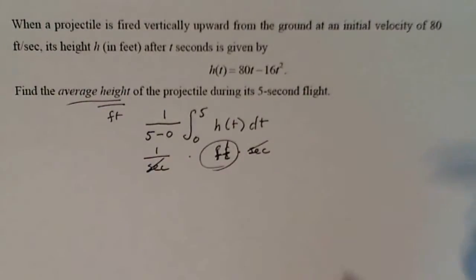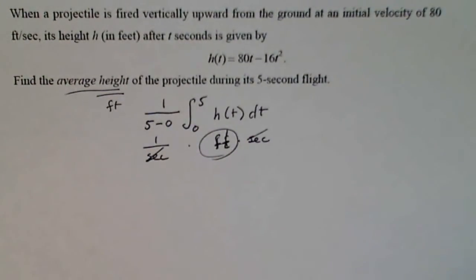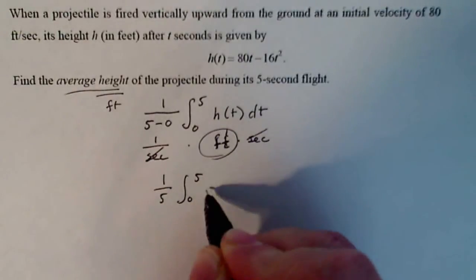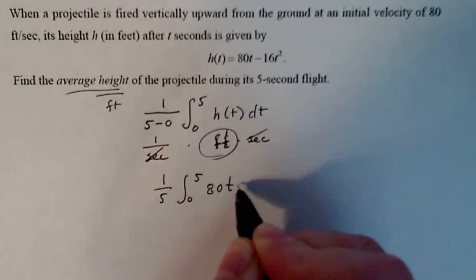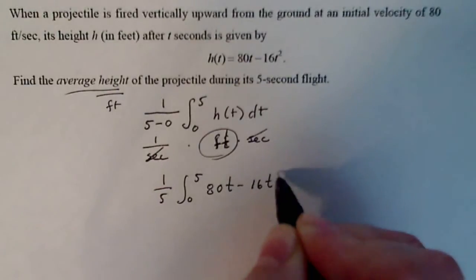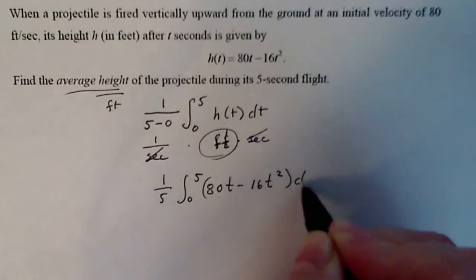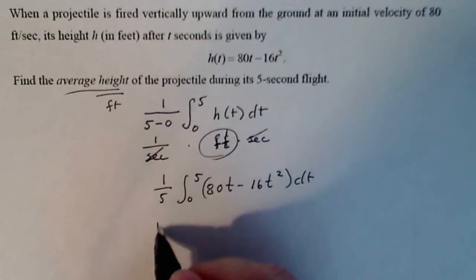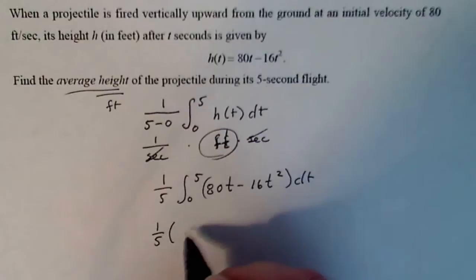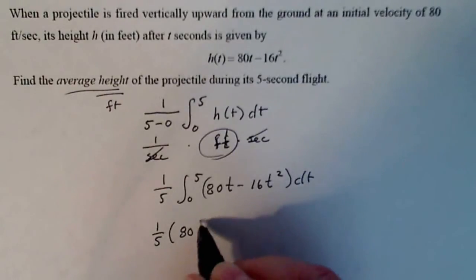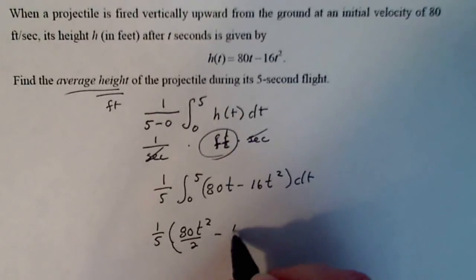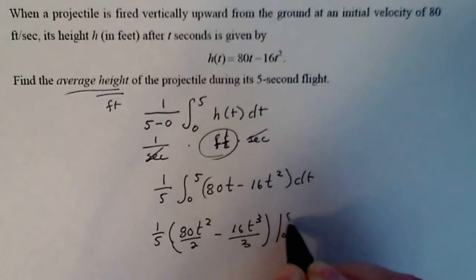Let's calculate this. We put the actual numbers in: one-fifth times the integral from zero to five of 80t minus 16t squared, dt. This is a straightforward integral — just the power rule. That gives us one-fifth times 80t squared over two, minus 16t cubed over three, from zero to five.